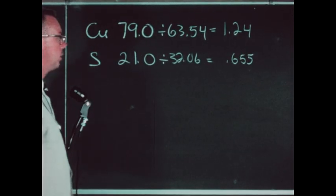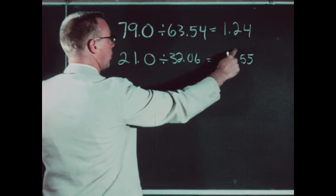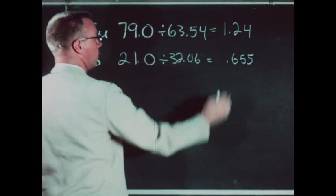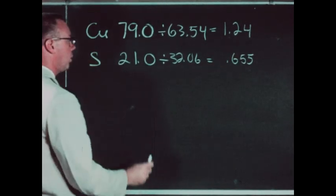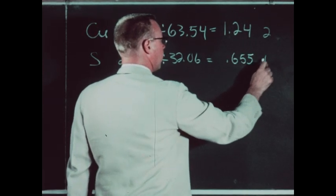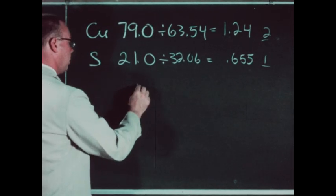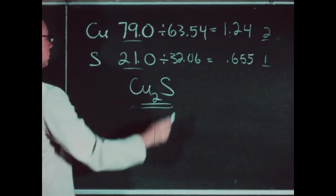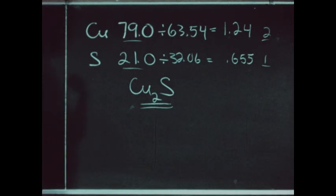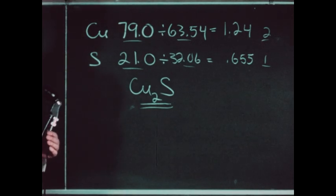These two numbers represent the ratio in which the atoms of copper and sulfur combine. It is obvious that 1.24 is approximately twice 0.655 — twice 0.65 would be 1.3. So the ratio between these two numbers is approximately 2 to 1, and we may write the formula for this sulfide of copper as Cu₂S. In carrying out this calculation, we needed two values: the weight ratios in which the elements combine, determined experimentally, and the atomic weights, looked up on our chart.